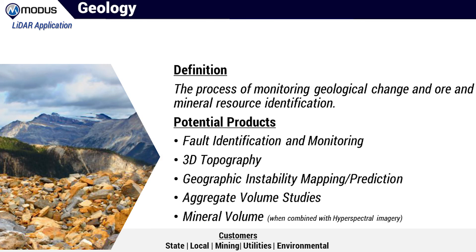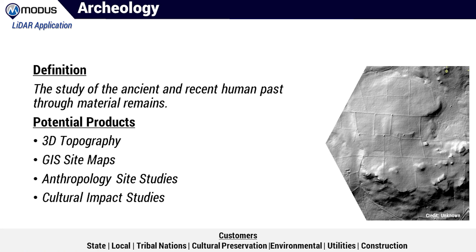The combination of LiDAR aircraft and GPS can be used to find fault lines and measure geographical uplift — this combination of technologies was used to find the Seattle fault. Repeated LiDAR mapping can monitor glacial change and perform coastal change analysis. LiDAR has also played an important role in archaeology: its vegetation penetration capability allows detection of microtopological structures, and used with GIS it aids archaeologists in determining buried civilization structures and establishing excavation and preservation priorities.